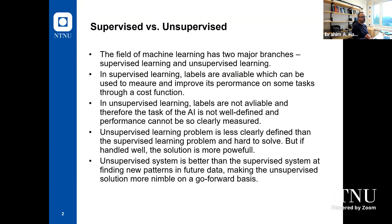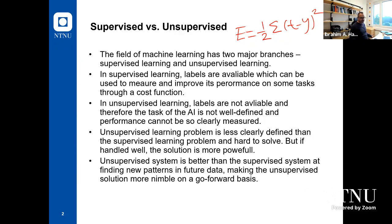In supervised learning, labels are available, which can be used to measure and improve performance on some tasks through a cost function. The cost function we mentioned — we have E equal to half multiplied by the summation of (t minus y) squared. This is the cost function, or loss function, which we try to minimize. This function is a function of the target values — the t is the labels.